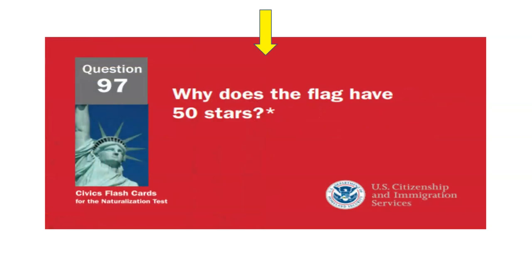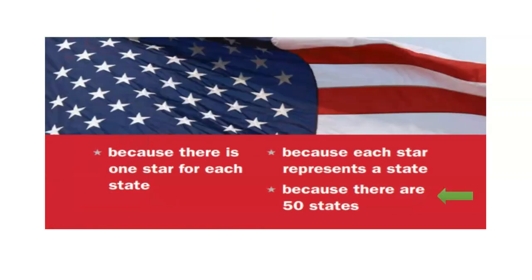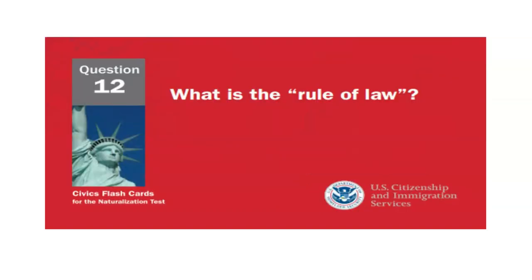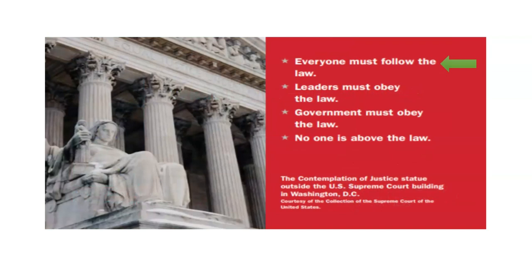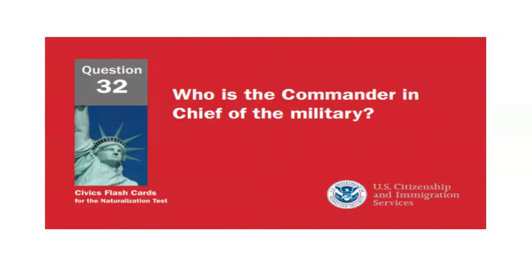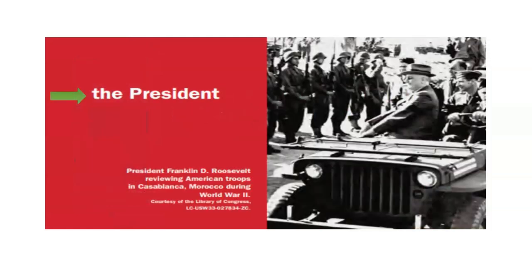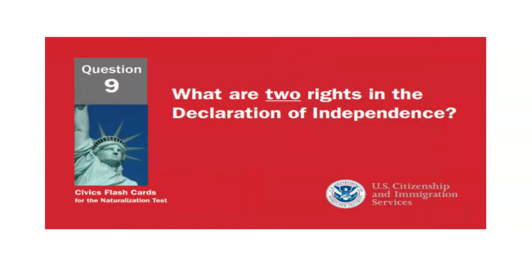Why does the flag have 50 stars? Because there are 50 states. What is the rule of law? Everyone must follow the law. Who is the commander-in-chief of the military? The president. What are two rights in the Declaration of Independence? Life and liberty.